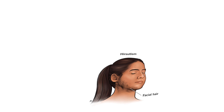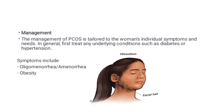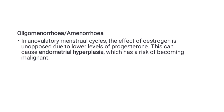Hirsutism is also a clinical feature we can observe. In terms of management, treatment of PCOS is tailored to the woman's individual symptoms and needs. In general, first treat any underlying conditions such as diabetes or hypertension. Symptoms to address include oligomenorrhea or amenorrhea, obesity, infertility, and hirsutism.